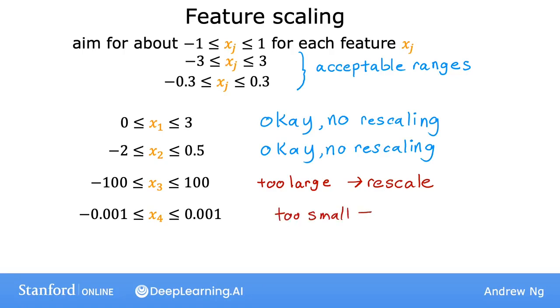Finally, what if your feature x5, such as measurements of a hospital patient's body temperature, ranges from 98.6 to 105 degrees Fahrenheit? In this case, these values are around 100, which is actually pretty large compared to other scaled features, and this will actually cause gradient descent to run more slowly. So in this case, feature rescaling will likely help. There's almost never any harm to carrying out feature rescaling. So when in doubt, I encourage you to just carry it out.